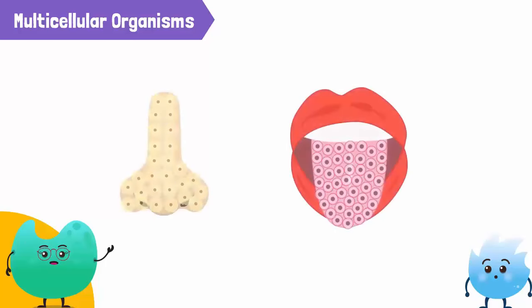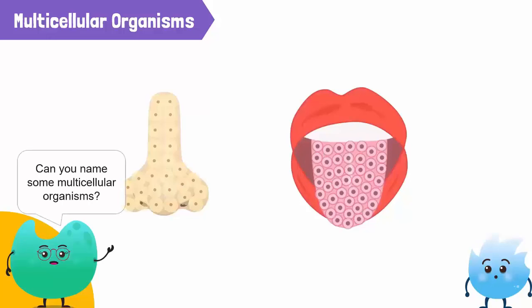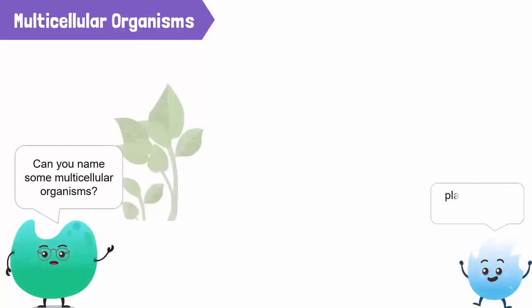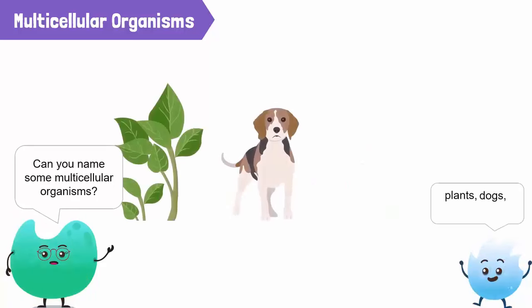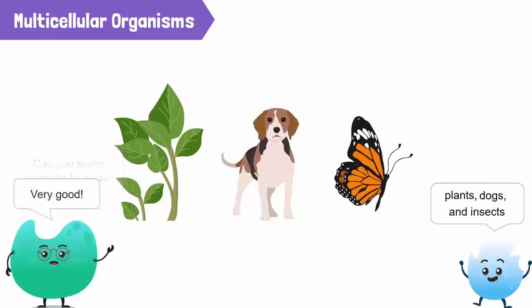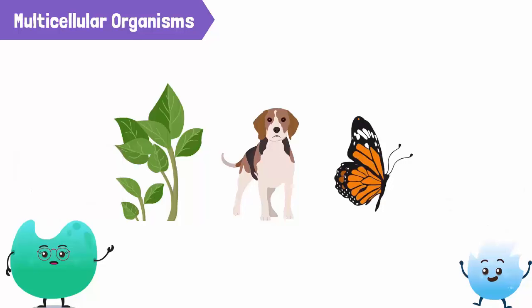Can you name some multicellular organisms around you? Plants, dogs, and insects. Very good! I understand now that 'multi' means many, so the organisms must have many cells to become multicellular.